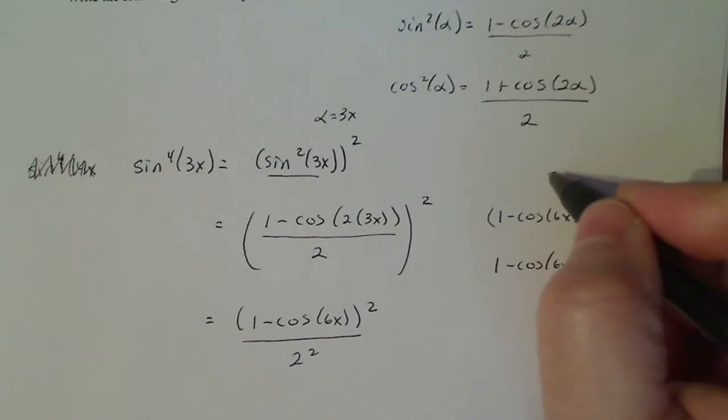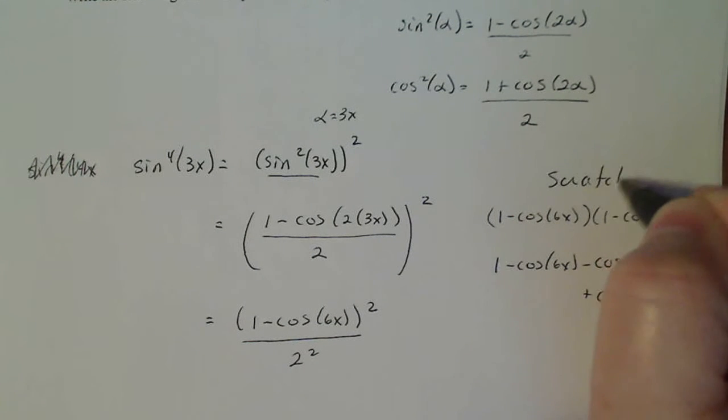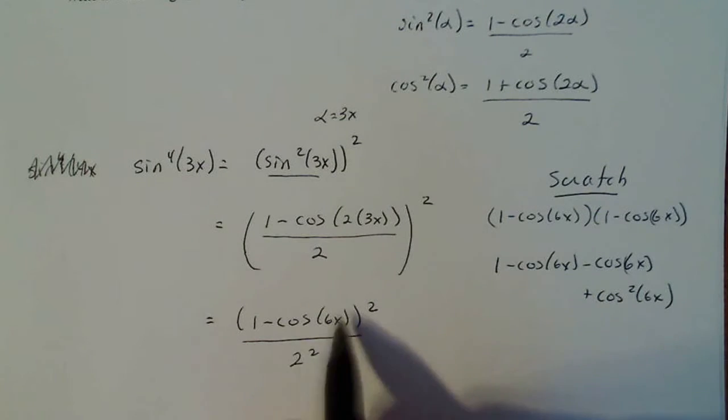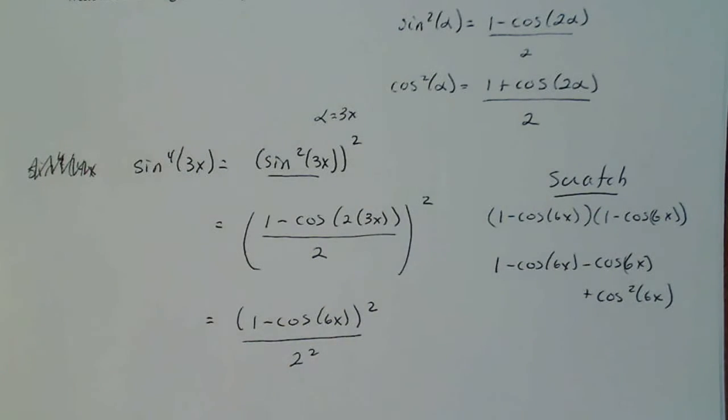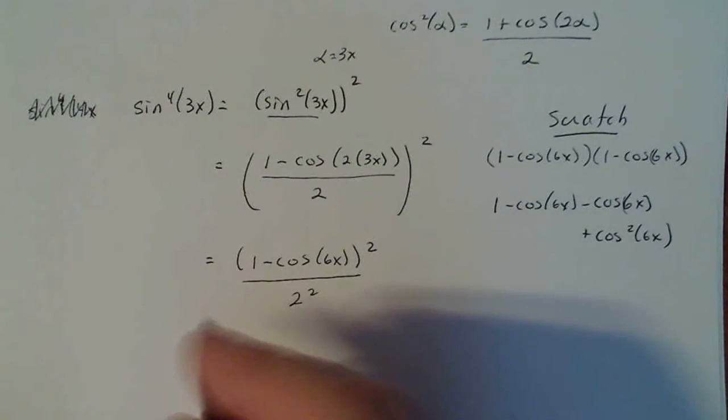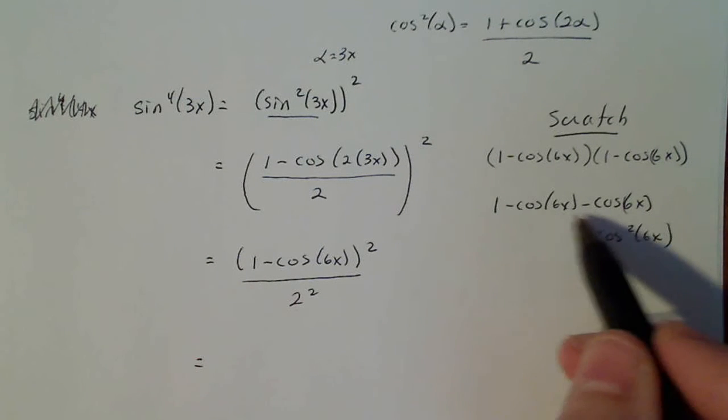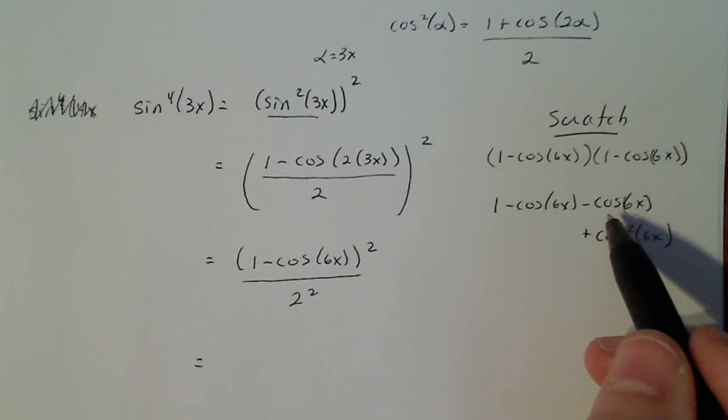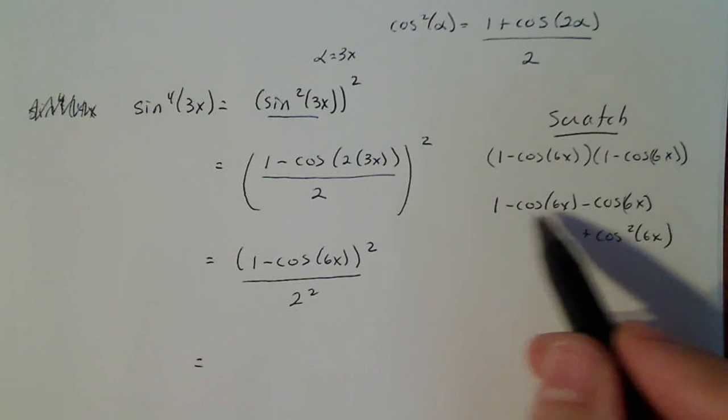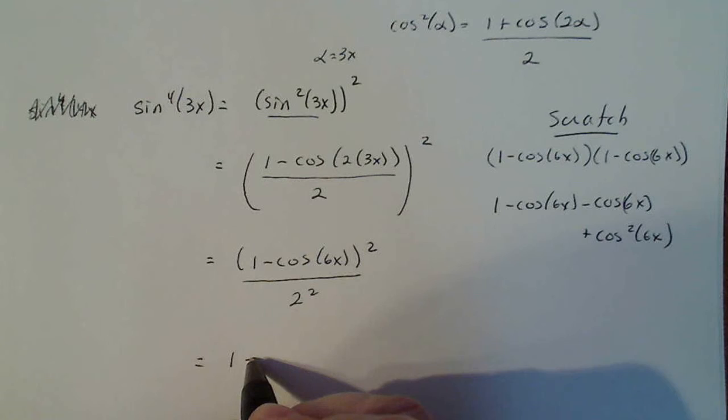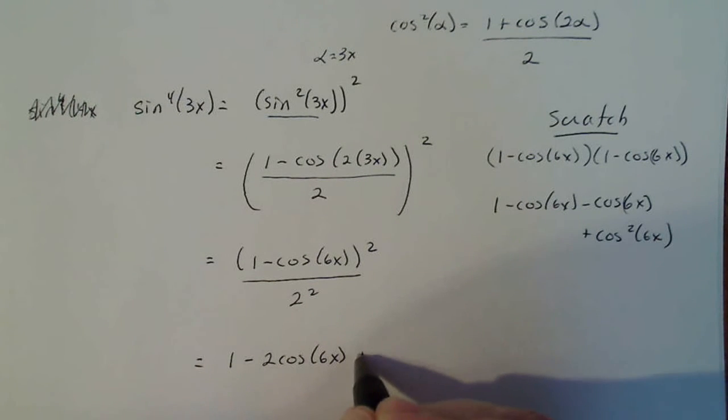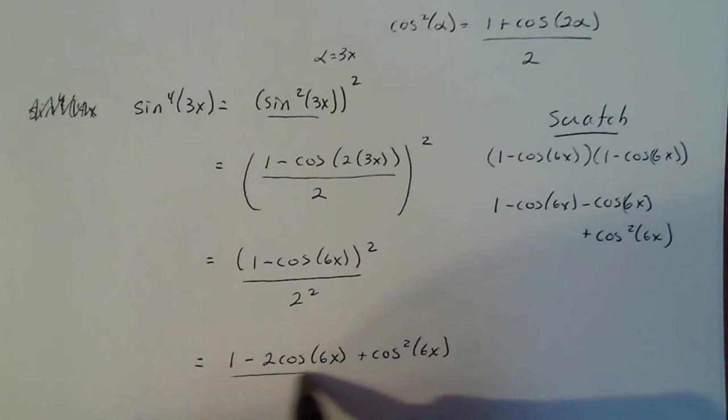So I'm going to replace my numerator with that expression expanded. This is scratch work showing the algebra to square that term. Continuing, if I combine these two, I have minus 2 cosine 6x. So 1 minus 2 cosine 6x plus cosine squared 6x, all divided by 4.